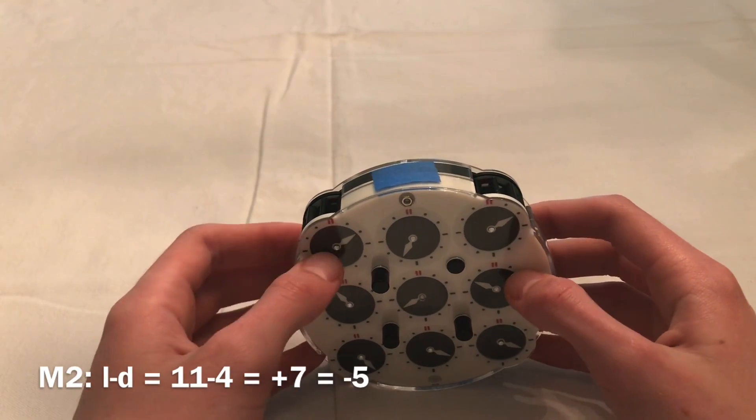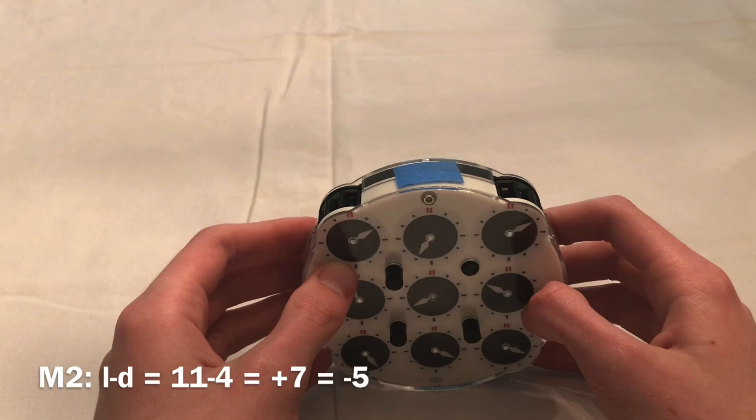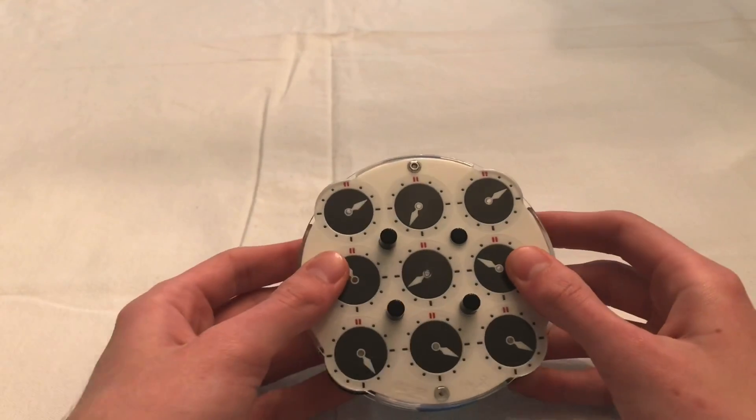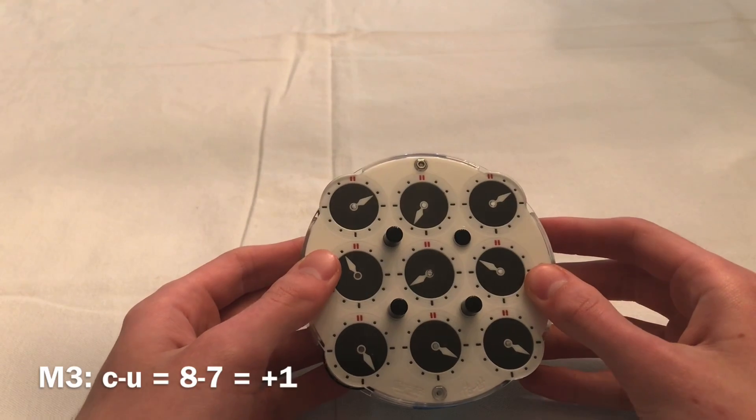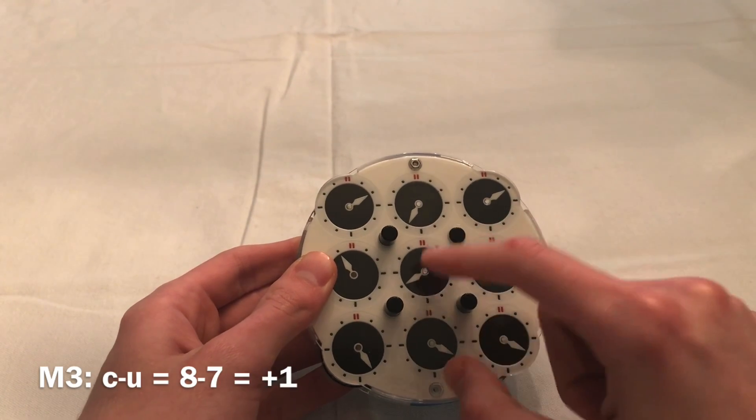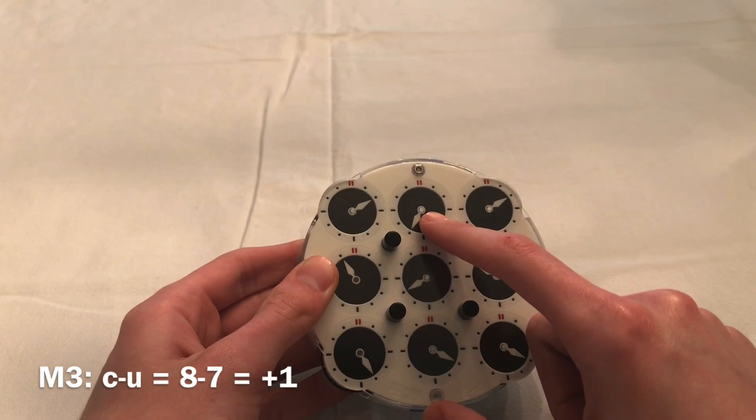It may seem complex now, but after a few dozen solves, you will get used to it. The next number is M3, which is calculated as C minus U. So 8 minus 7, which is equal to 1.